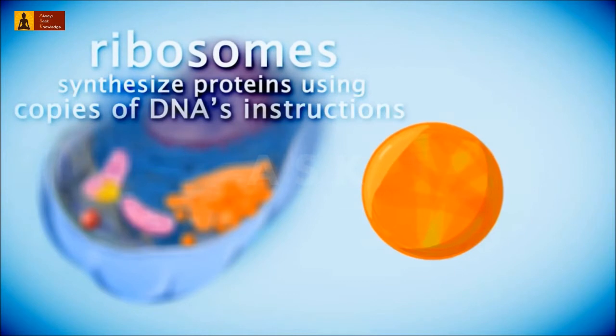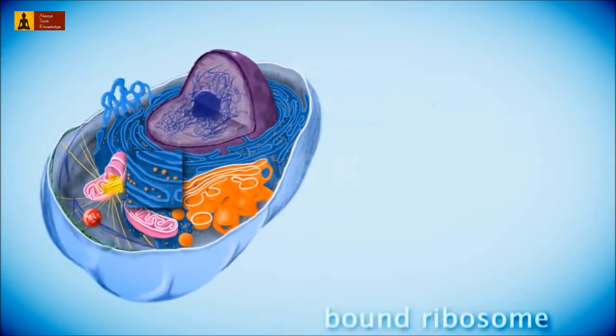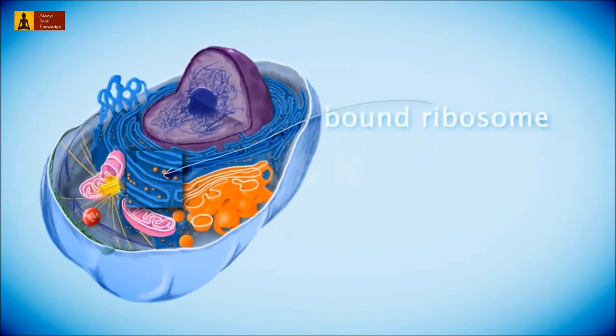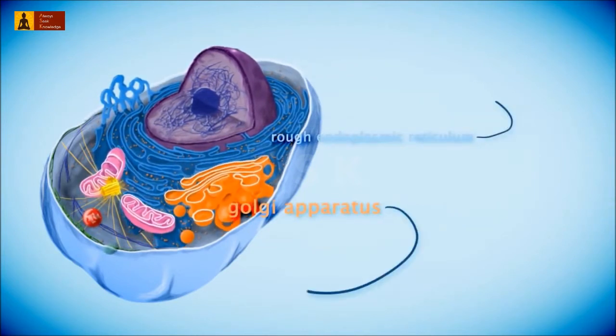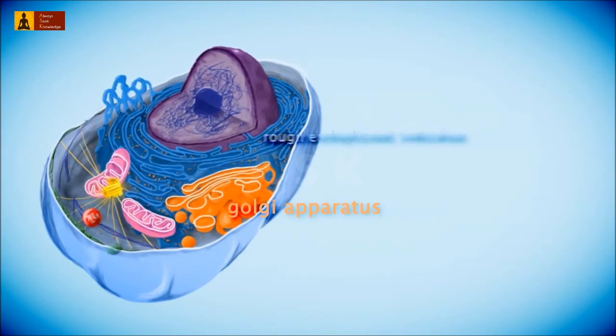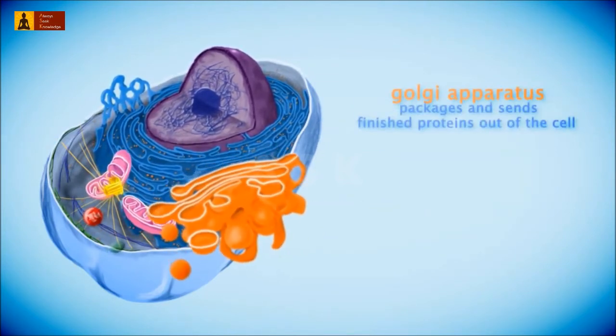Free-floating ribosomes produce proteins that will be used inside the cell, while bound ribosomes produce proteins that will be shipped out of the plasma membrane. Bound ribosomes produce proteins that are packaged in the rough endoplasmic reticulum and transported to the Golgi apparatus for further modification. The Golgi apparatus then sends the proteins to the cell membrane, where the protein will leave the cell and be used by the animal's body.